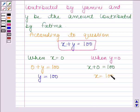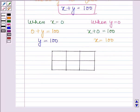Now we will represent these solutions in tabular form. So let's make a table. When X equals 0, Y equals 100, and when Y equals 0, X equals 100. Now we will plot these points on the graph.